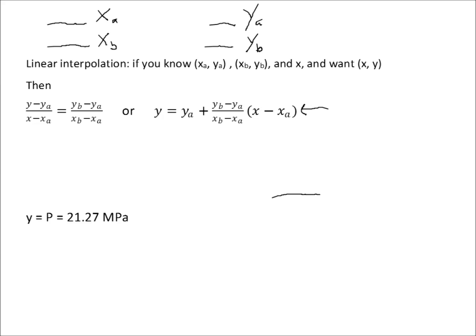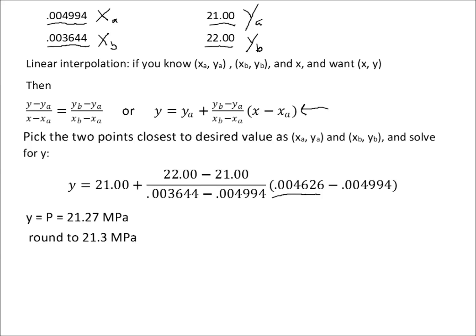The result in this case is that Y, which is the pressure we're looking for at .004626 cubic meters per kilogram specific volume, is 21.27 megapascals. Now it's unlikely that we're going to have four significant figures of precision when we use the linear interpolation method because we approximated the pressure versus specific volume curve as a linear relationship. If it is not perfectly linear, then this answer will not be exact. Therefore I recommend that we round off to three significant figures, which in this case would be 21.3 megapascals.